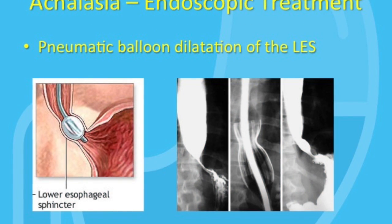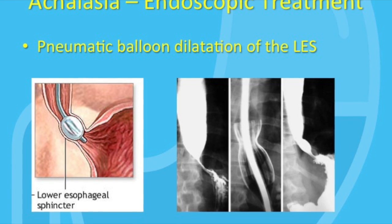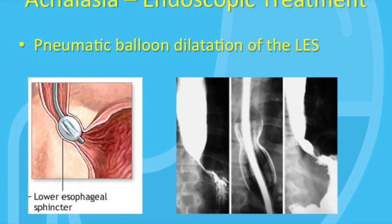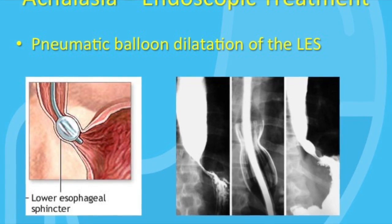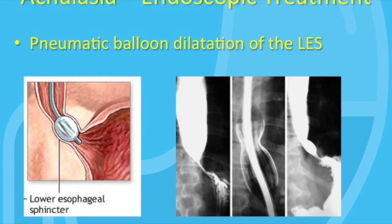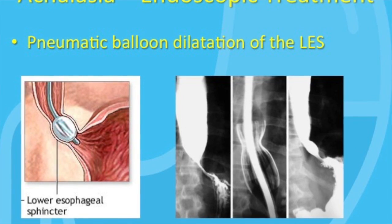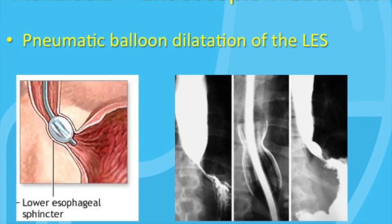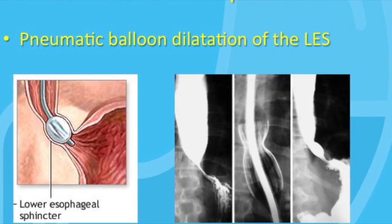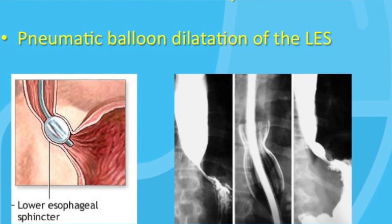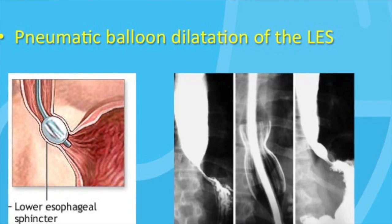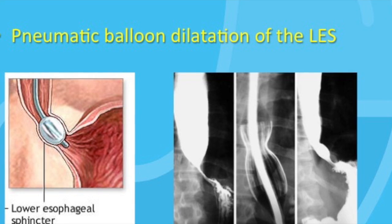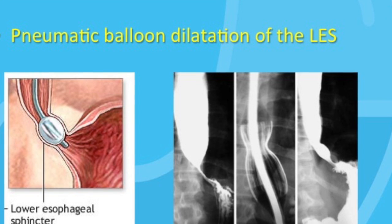Endoscopic pneumatic balloon dilation aims to disrupt the muscle fibers of the LES in order to decrease the pressure. There are three different sizes of balloon — 30, 35, and 40 mm — and each dilation is done at a different session. Some patients need one, two, or three stretches, but it is difficult to tell ahead of time how many a particular patient will require in order to derive symptomatic benefit. The dilations work well, but they do carry risks; in particular, there is a 5% risk of perforation, which is a serious complication.